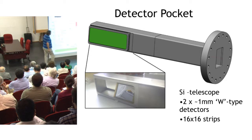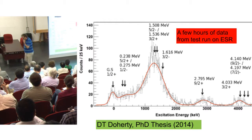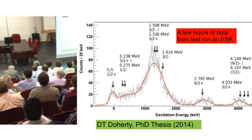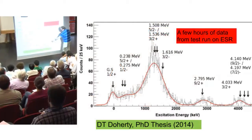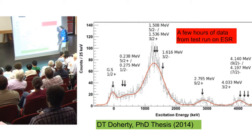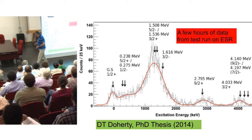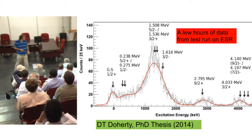We ended up with a few hours of data — it was a very dramatic experiment. This was showing you could do transfer reaction studies with a heavy-ion storage ring facility. The arrows here are where the known states are in neon-19. Nature has found us at least one clean state so we can see the kind of resolution we get, which is 200 keV — actually determined by the beam spot size.